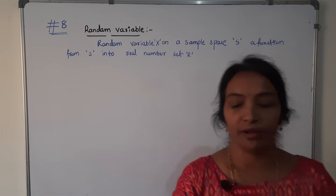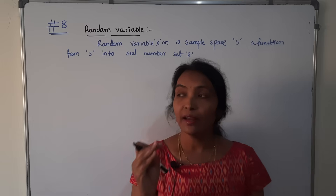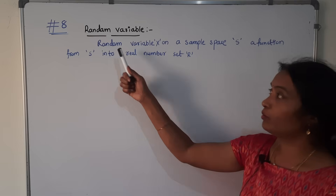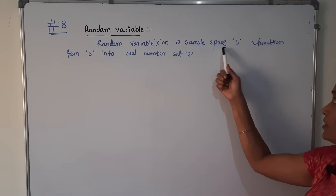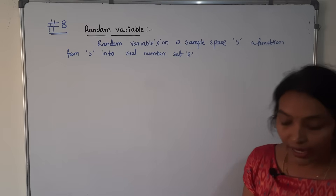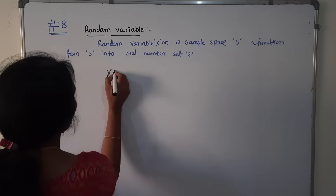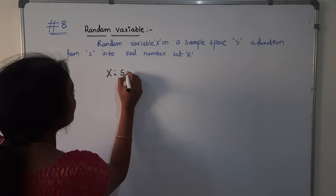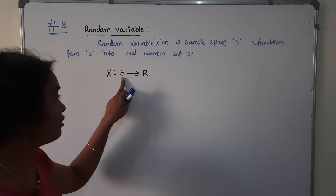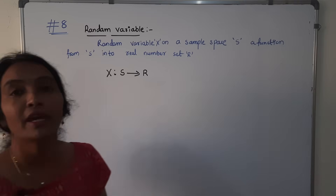First of all, let's discuss the random variable. In the first class we already explained the random experiment. A random variable X on a sample space is a function from S into the real number set — that means the sample space is mapped to the real number set.